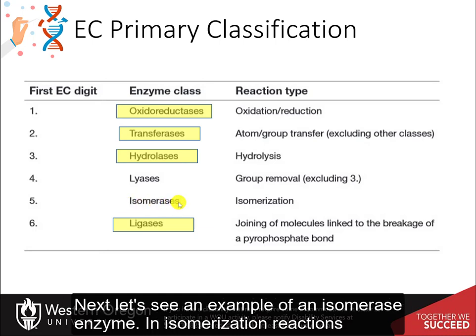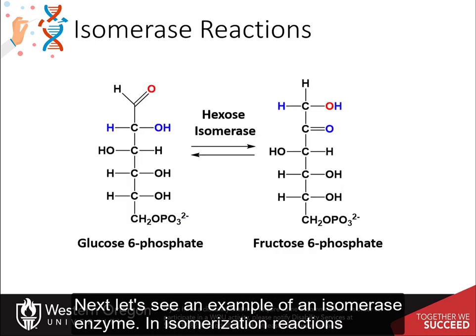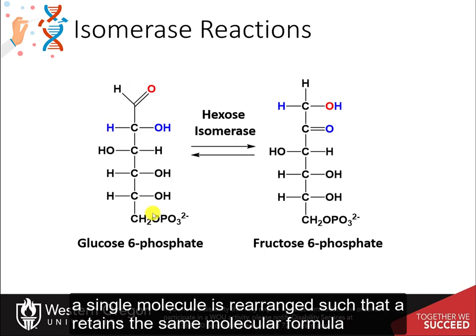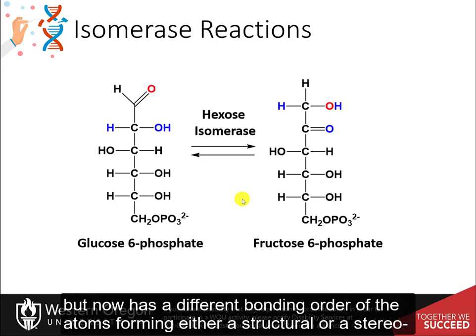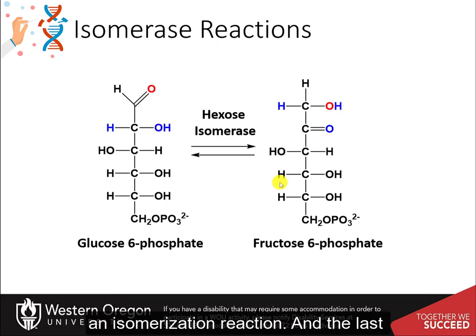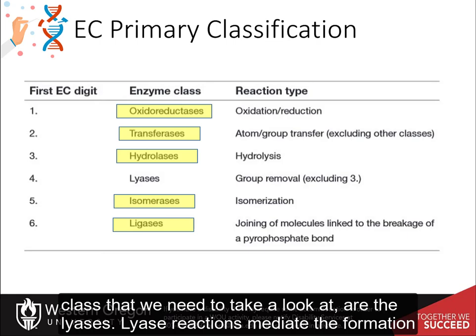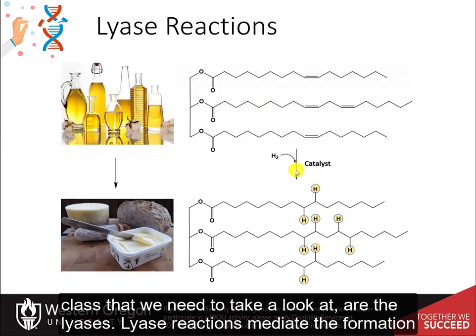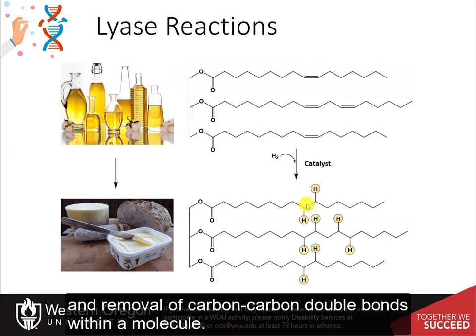Next, let's look at an example of an isomerase enzyme. In isomerization reactions, a single molecule is rearranged such that it retains the same molecular formula but has a different bonding order of atoms, forming either a structural or a stereoisomer. The conversion of glucose-6-phosphate to fructose-6-phosphate is a good example of an isomerization reaction. The last class to examine are the lyases, which mediate the formation and removal of carbon-carbon double bonds within a molecule.